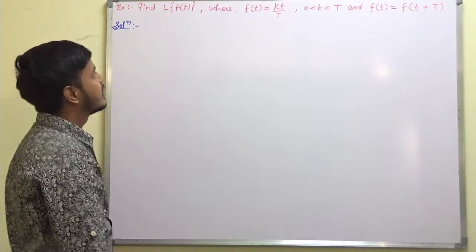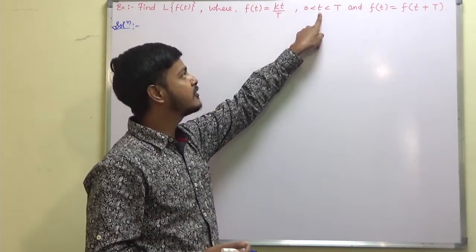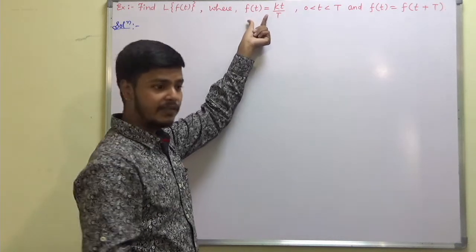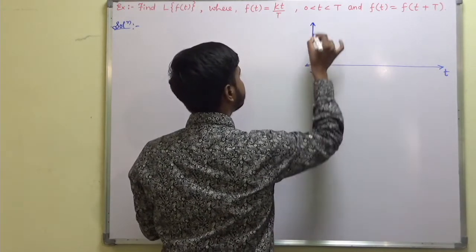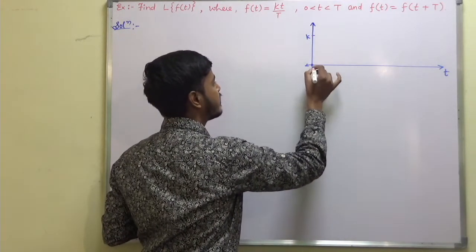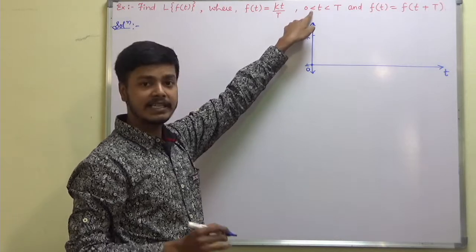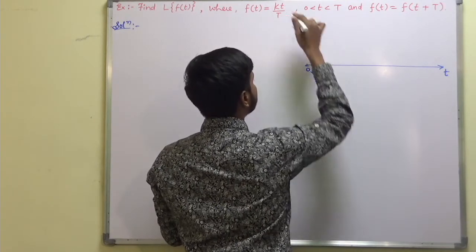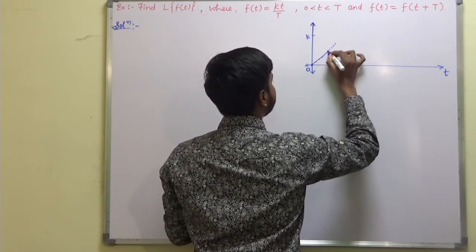If you want to see its graphical representation, you can take different values of t and get different values of f(t). So on the graph, this axis is t and say this is k somewhere here. When you substitute t approaching 0 (we cannot substitute exactly 0 since it is strictly greater than 0), taking t as 0.1 gives a value somewhere here, then here, and it goes like this.